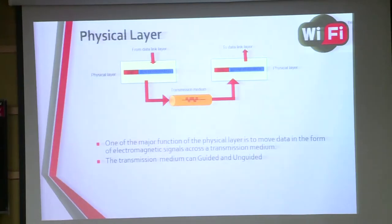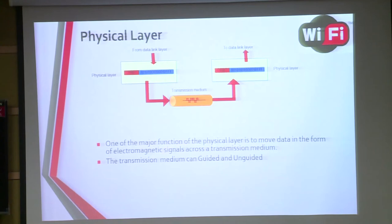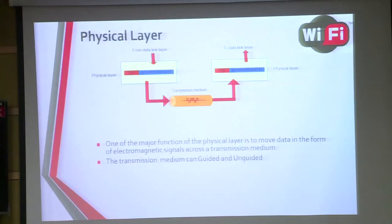Now, the physical layer. The physical layer is the first layer of the OSI reference model. This layer is responsible for the movement of bits and the signaling. There are two types of signaling: digital and analog. A digital signal is a discrete signal which covers a sequence of bits and can have only two states — either zero or one.